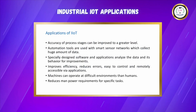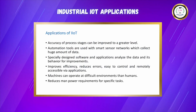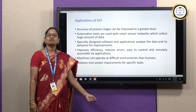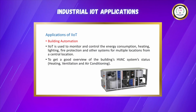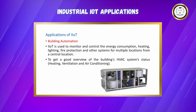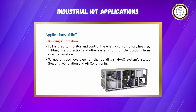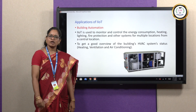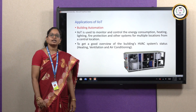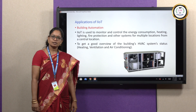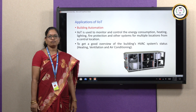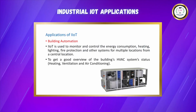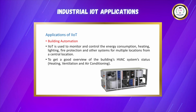Machines can operate in harsh environments where humans cannot. Machines reduce manpower requirements for specific tasks. Another interesting application of industrial IoT is building automation. IoT is used to monitor and control the energy consumption, heating, lighting, fire protection and other systems for multiple locations from a central location.